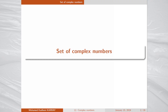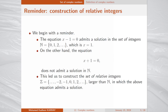We begin by defining the set of complex numbers. To this end, we begin with a reminder. Recall that the equation x minus 1 equals 0 admits the solution in the set of integers N = {0, 1, 2, ...}, and the solution is x equals 1.